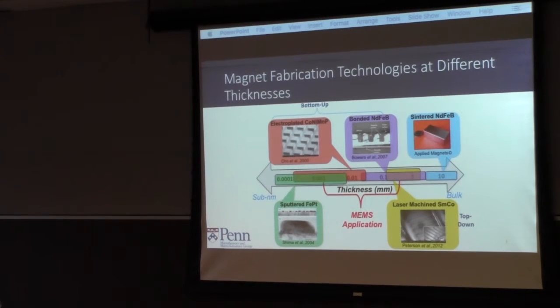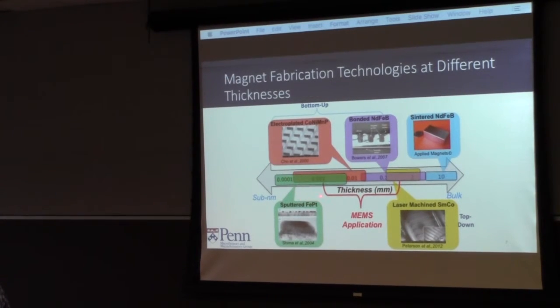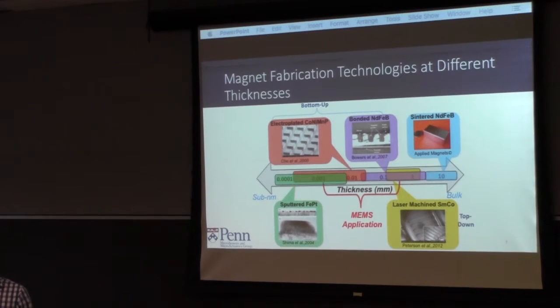Here's a little chart showing where my magnets tend to fit in. We have sputtering, electroplating, which are the smallest. We have bonded neodymium, which is really just embedded in a resin of some kind. Then we have larger magnets, being sintered metals, NDFEB or samarium cobalt, which is the material that I use. My laser machined materials fit somewhere in this range.